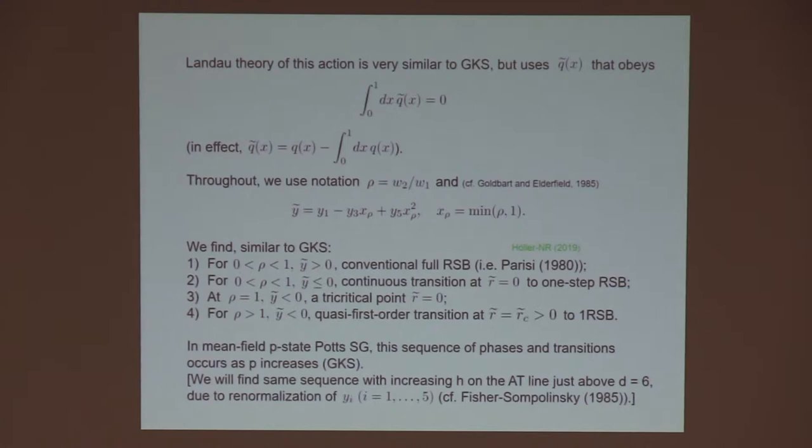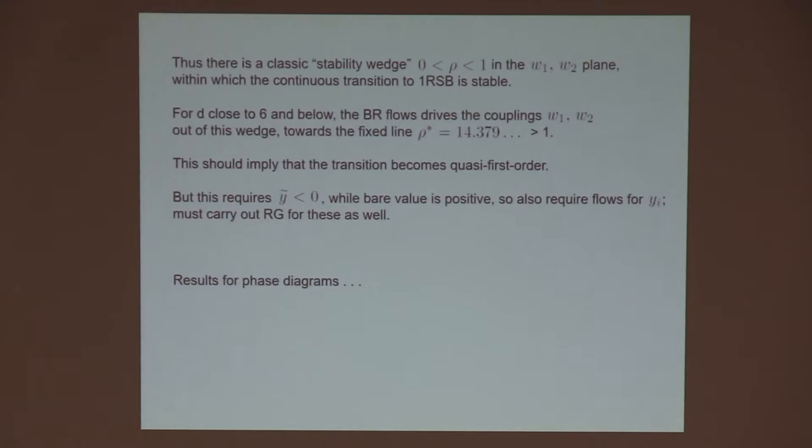Now, if we go back to the Bray-Roberts flows for the couplings in this theory, close to 6 dimensions, for W1 and W2, what they found is that the couplings flow towards the value of the ratio, which is 14 point something. Since that is certainly larger than 1, this means that the couplings are actually flowing out of the stable wedge into a region where we may have a first-order transition or quasi-first-order. But if that's going to be stabilized, at least within the Landau theory that we're using, we need Y tilde to be negative. While the bare value of this parameter is positive, that's why we get the full RSB in the usual mean field theory. So we need to know the renormalization group flows for those quartic couplings.